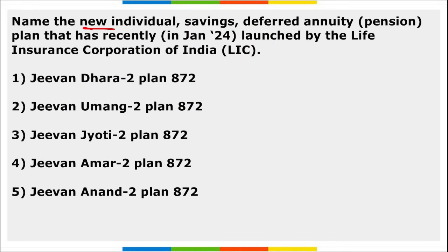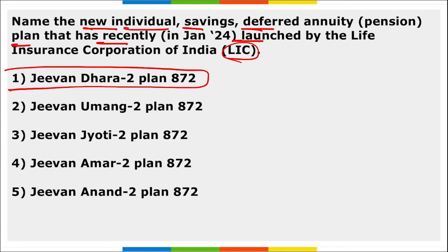LIC recently launched a new individual saving deferred annuity pension plan named 'Jeevan Dhara 2' (Plan 872). This plan is available for sale from 22nd of January 2024.